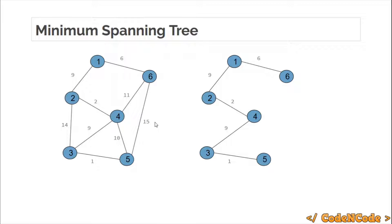In a spanning tree — in fact in any connected tree — if there are N nodes, then there are N-1 edges. As you can see, there are 6 nodes, so in the spanning tree we have 5 edges. The sum is minimum, which is why this is the MST.